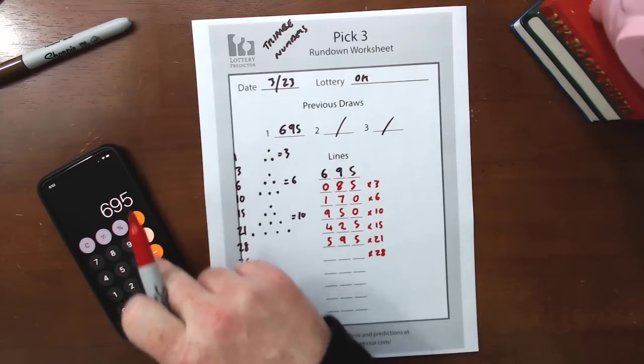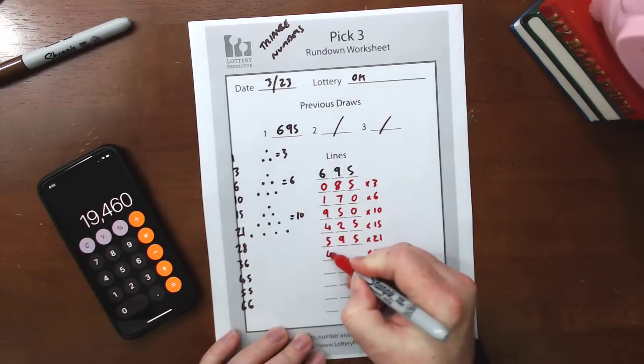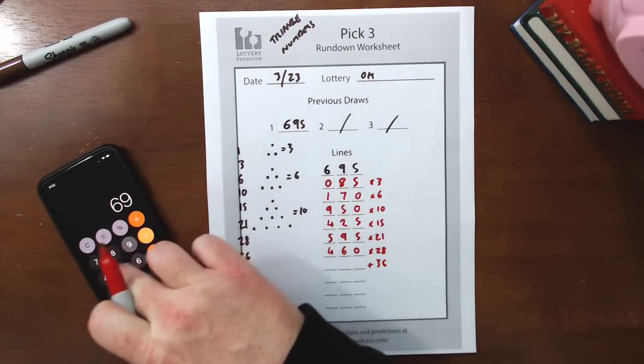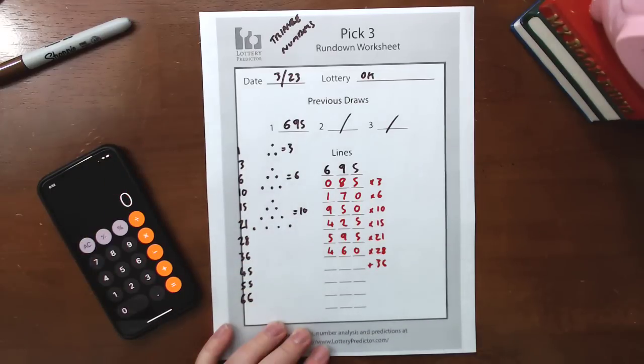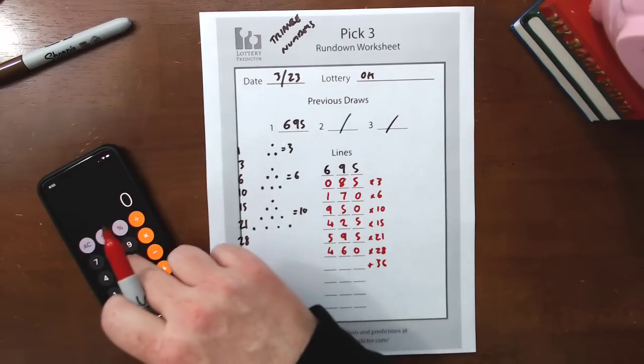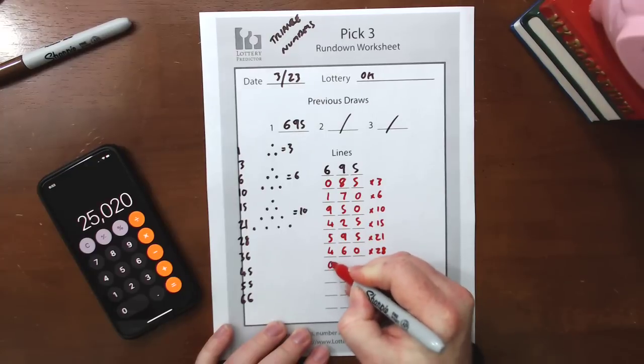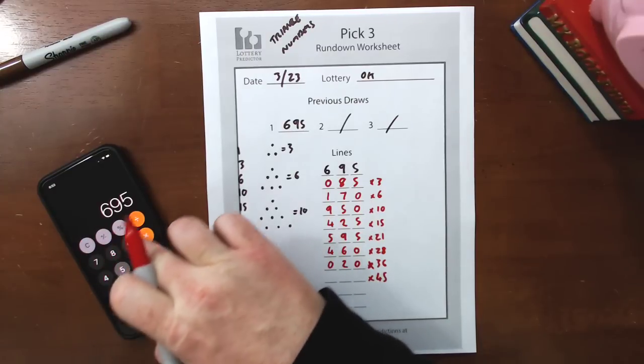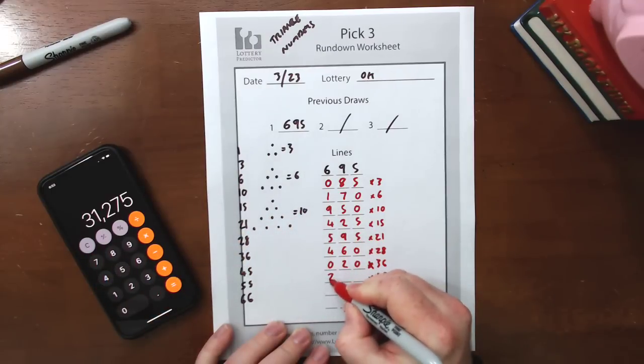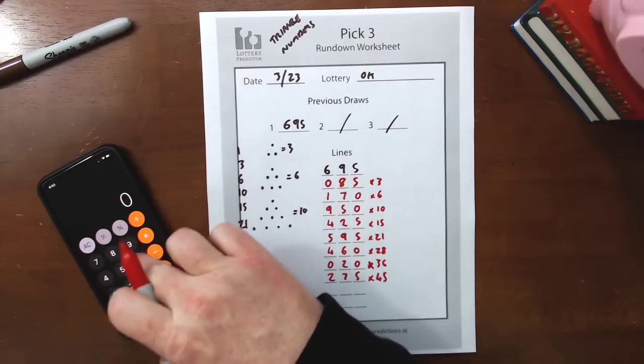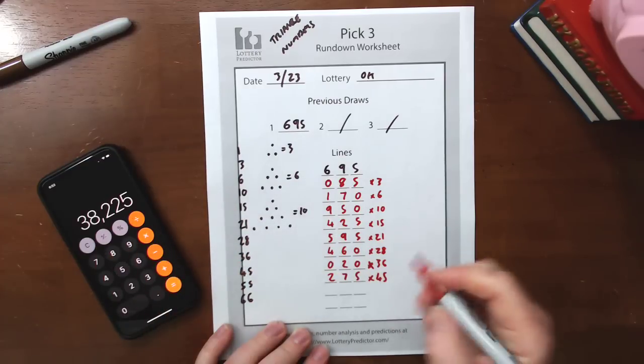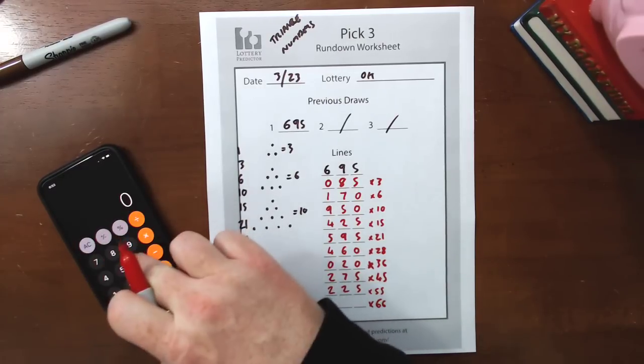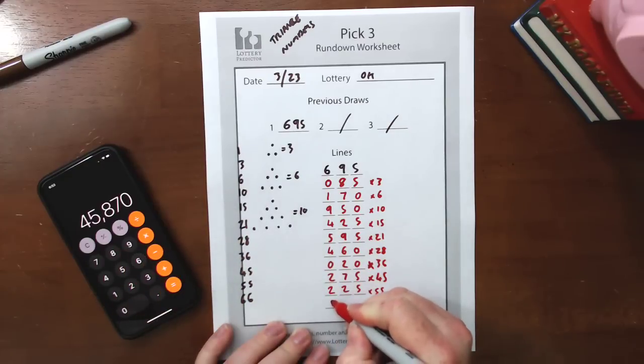I'm just going to do 10 lines as an example. Next one is 36. 695 multiply by 36. I didn't clean out the calculator properly and I got 17 million. That was a wrong number. Here we go, 020. Next one is 45. That's 695 multiplied by 45 is 275. 695 multiplied by the next one down, which is 55, is 225. And then finally 66, which is our last triangle number that we're going to be using, and it's an 870.